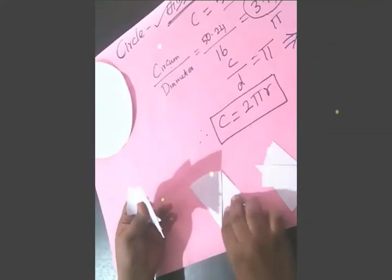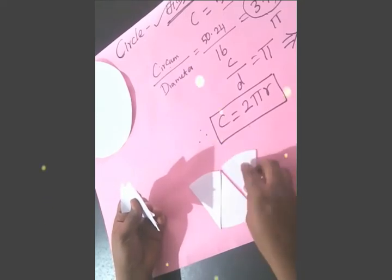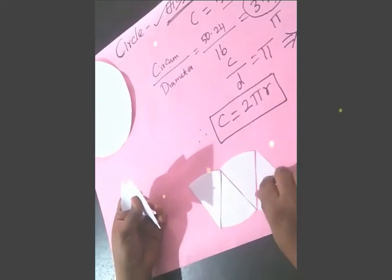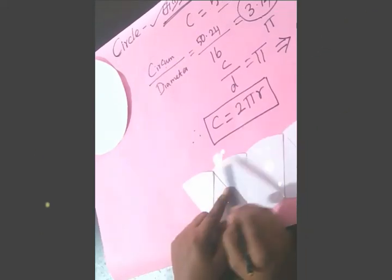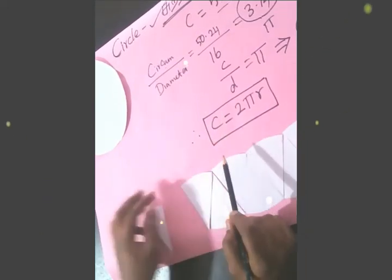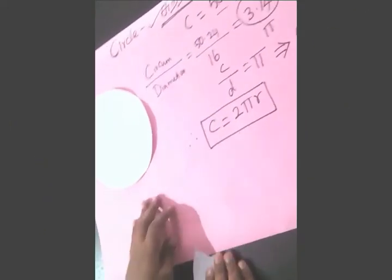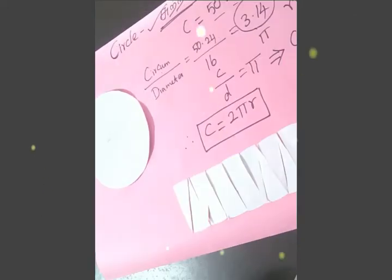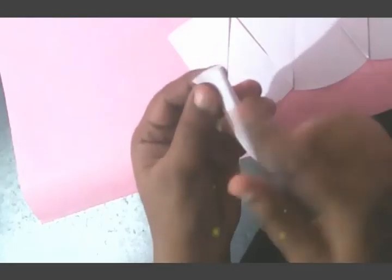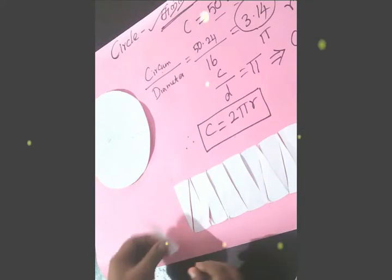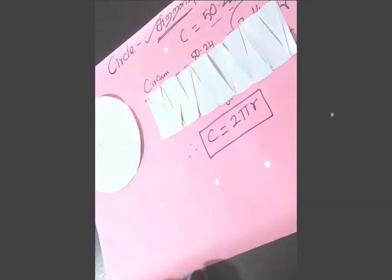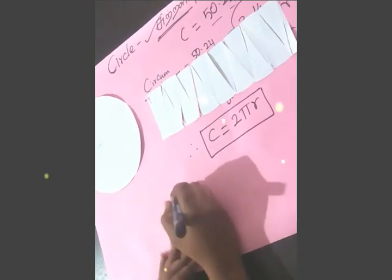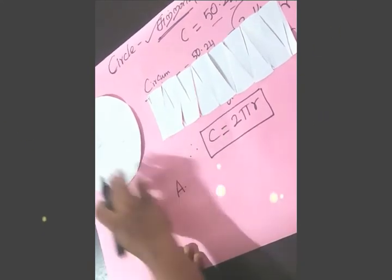First, we will cut the circle into 8 parts and place them to form a rectangle shape. But the edges are curved. If you cut into smaller and smaller pieces, you can arrange those small pieces to form a near-perfect rectangle. So the circle becomes equivalent to a rectangle.